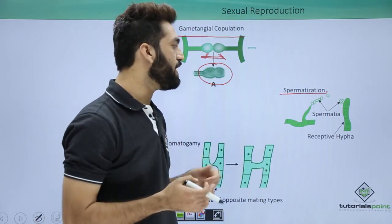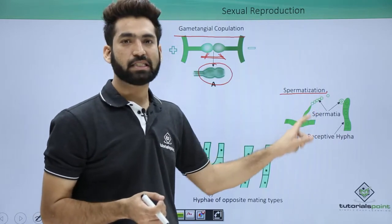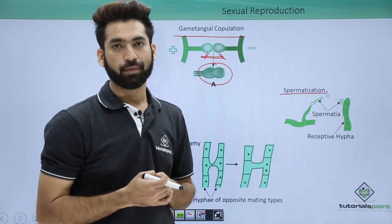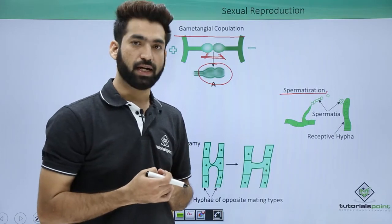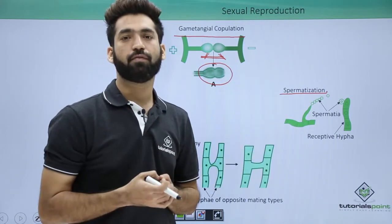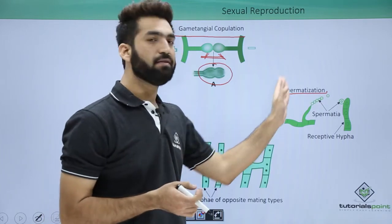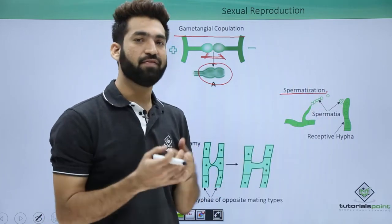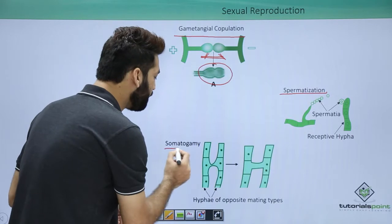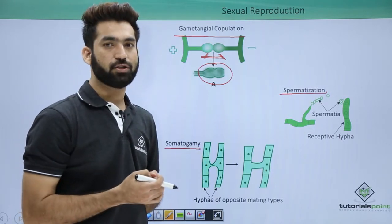The fourth method is spermatization. Spermatia, or sperm-like structures, are formed on spermatophores; they are non-motile. Because they are non-motile, they are carried by air or water currents to reach the female gamete and fertilize it.